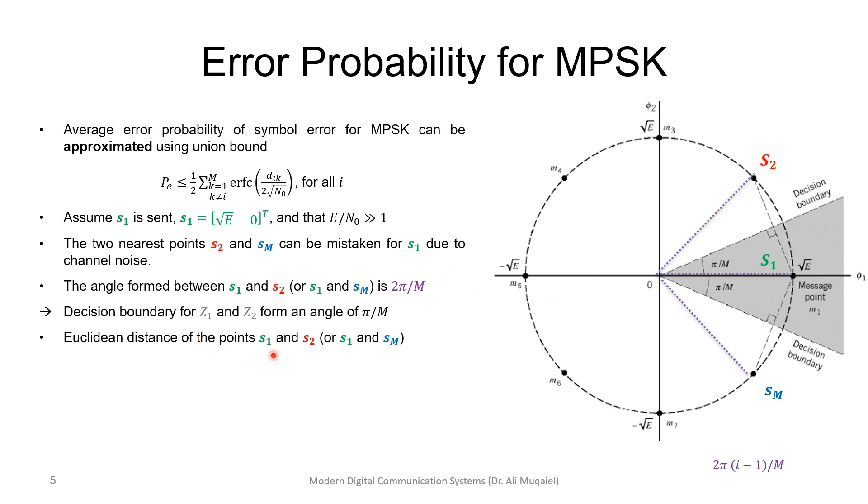The Euclidean distance between point s1 and s2 we can find using geometry. We know that this angle is two pi over M. So this distance from here to here is two times square root of E, so from here to here we can find it as square root of E times sine of pi over M. This is a right-angle triangle, so this guy is square root of E times sine pi over M, and we have double the distance here. We have factor of two. This distance is the same. We need this distance now in brown to substitute back and get the probability of error.